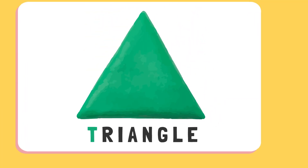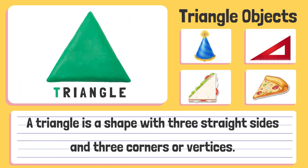Triangle. A triangle is a shape with three straight sides and three corners or vertices.